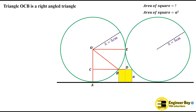We can use the Pythagorean theorem to determine the side of the square. The hypotenuse is OB, so OB² = CB² + OC². OB is the radius, which is 5 centimeters. CA is the side of the square, labeled a, so OC equals r minus a — we subtract the side of the square from the radius to get the perpendicular of the right angle triangle.